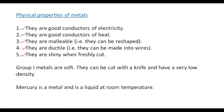Group 1 metals are soft — they can be cut with a knife and have a very low density. Mercury is a metal and is a liquid at room temperature.